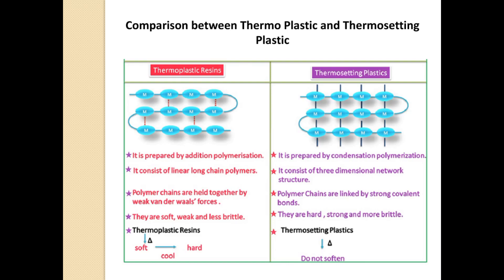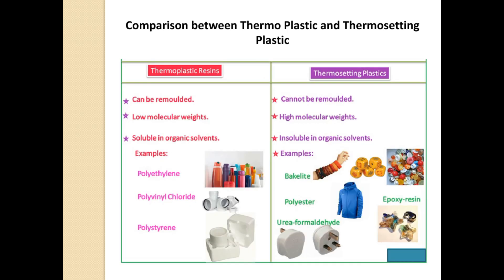In thermoplastics, polymer chains are held together by weak van der Waals forces, whereas in thermosetting plastics, polymer chains are linked by strong covalent bonds. Thermoplastics are soft, weak, and less brittle, whereas thermosetting plastics are hard, strong, and more brittle. After heating, thermoplastics get soft; after cooling they get hard. But thermosetting plastics do not get soft after heating. Thermoplastic materials can be remolded, whereas thermosetting plastics cannot be remolded.